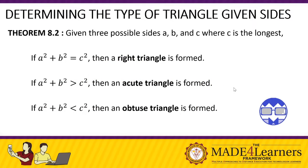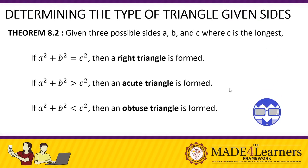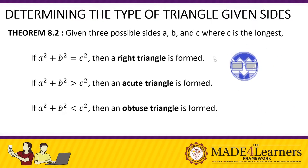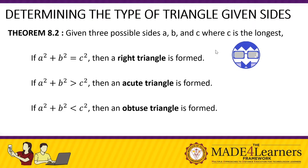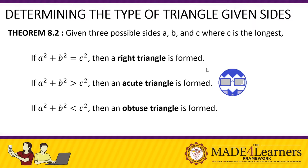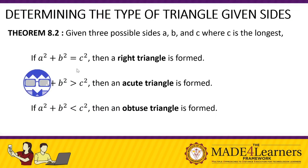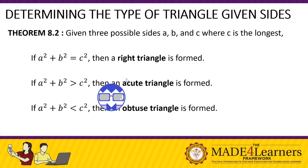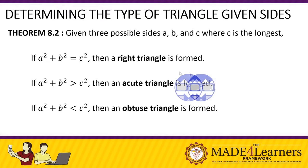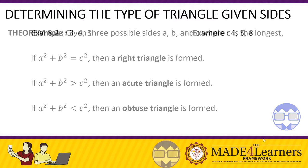Now we have Theorem 8.2: given three possible sides a, b, and c where c is the longest side, we use three conditions to determine the type of triangle. If a² + b² equals c², a right triangle is formed — this is the Pythagorean theorem. If a² + b² is greater than c², you have an acute triangle. If a² + b² is less than c², you have an obtuse triangle.